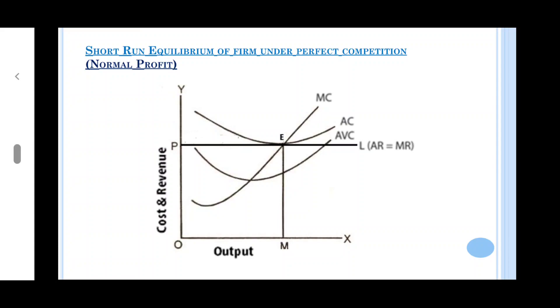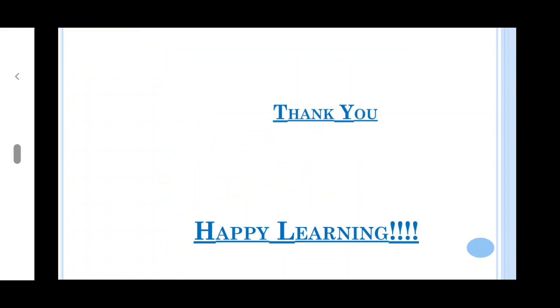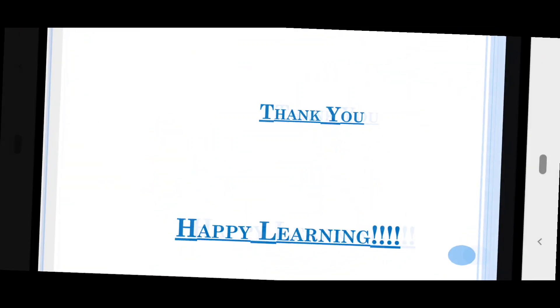There is no attraction for them to enter the market and start production. So this is a case of equilibrium of the firm under perfect competition in the short run earning normal profits. In the next video, I will explain the firms earning super normal profits and the firms facing losses. I will give you explanation about these two conditions in the next video. Till that, thank you very much, thanks a lot.